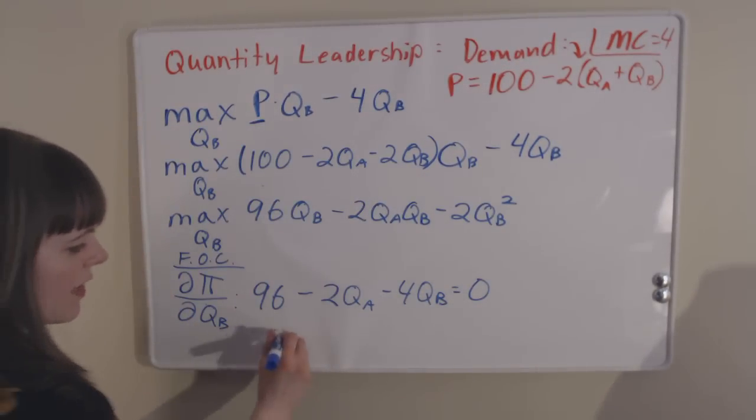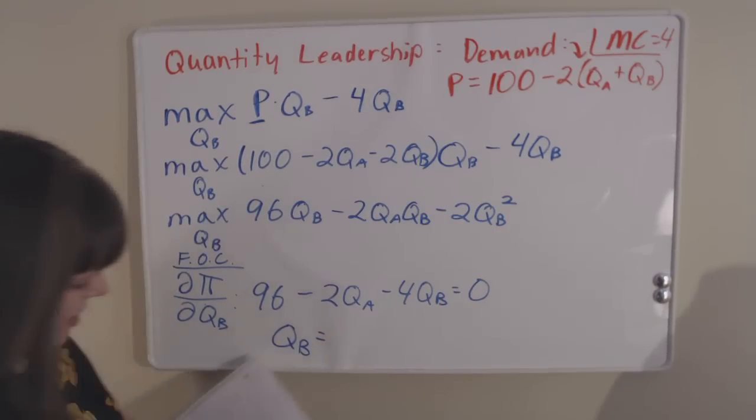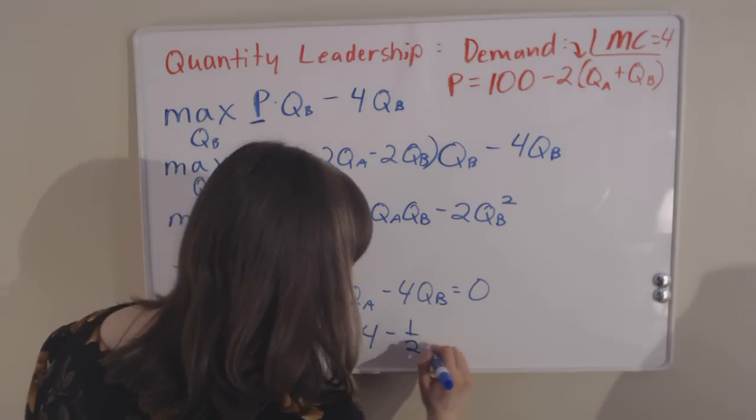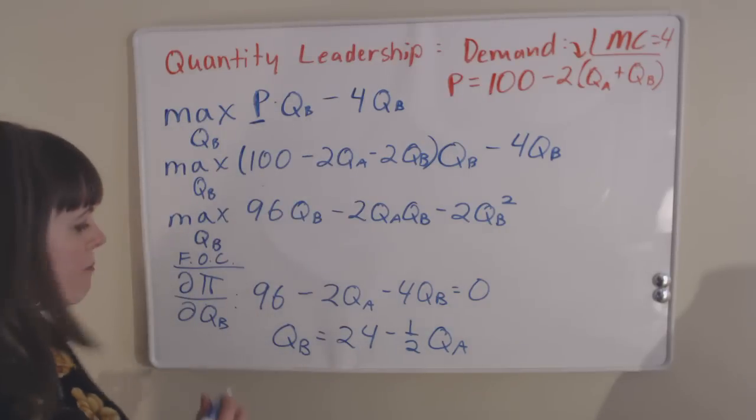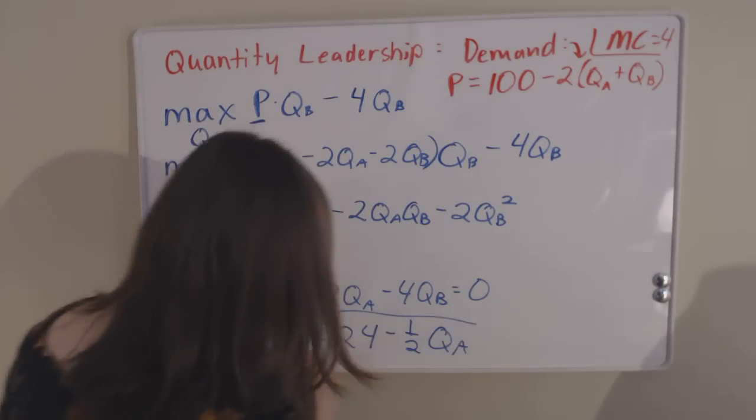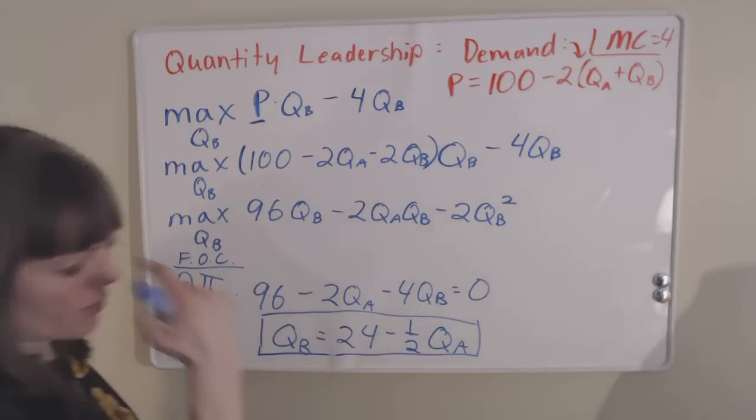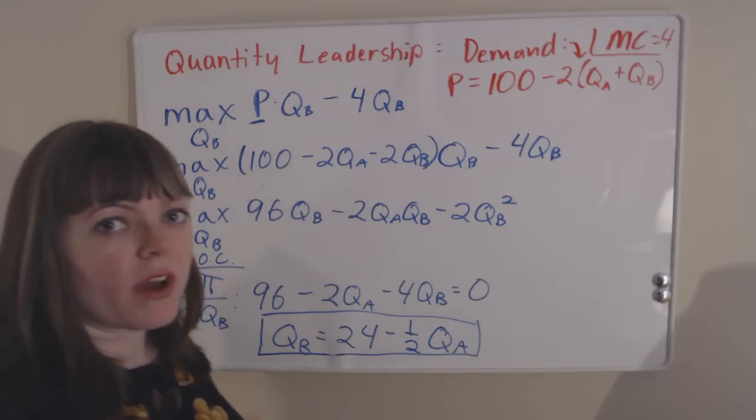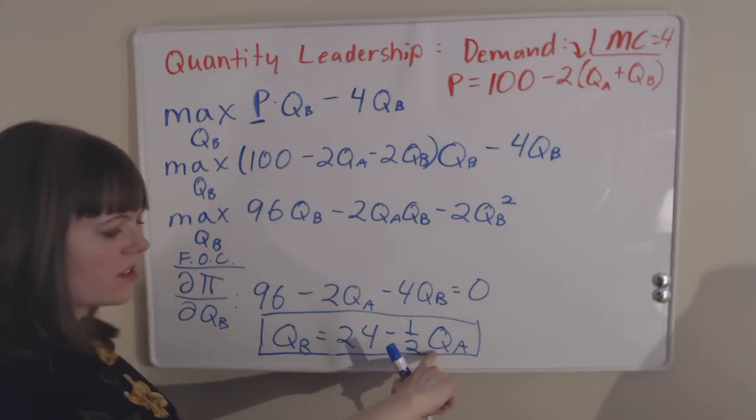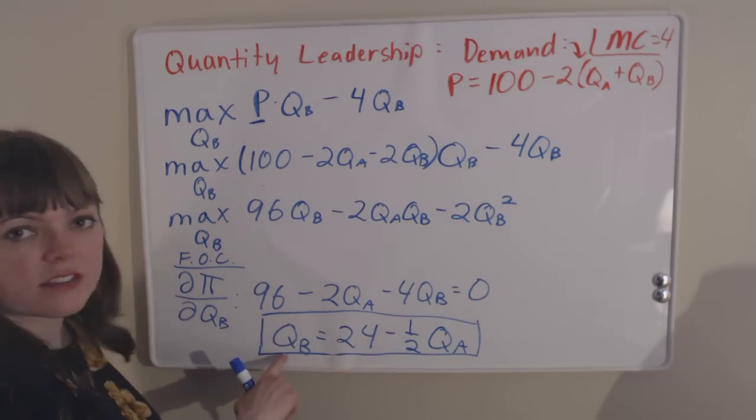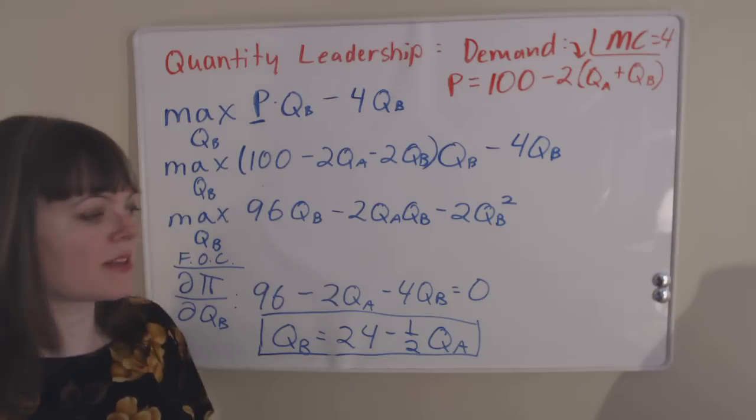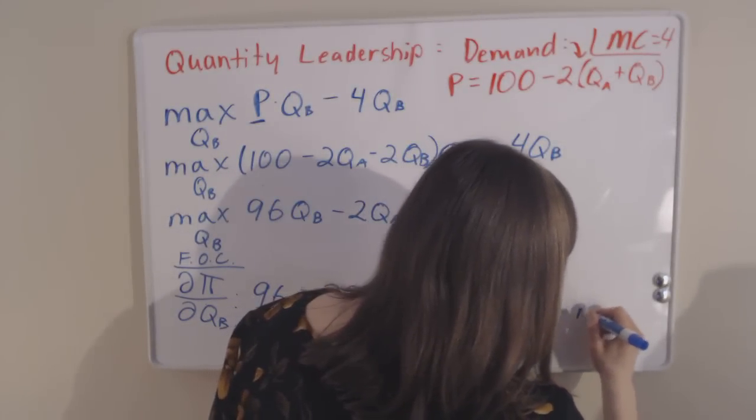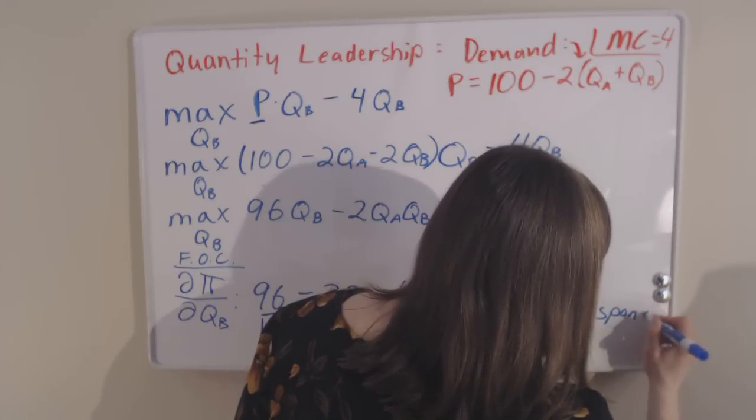When we solve that, we find that QB is equal to 24 minus 1 half QA. And this is going to be our best response function. The best response function simply says whatever firm A does in round 1, firm B can figure out what should they do by plugging firm A's quantity into this function, and it'll tell them what's their optimal decision, what's their profit maximizing decision given that.